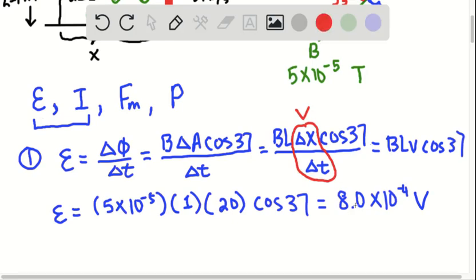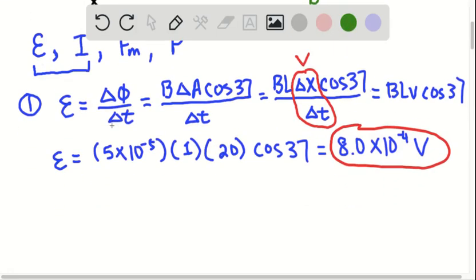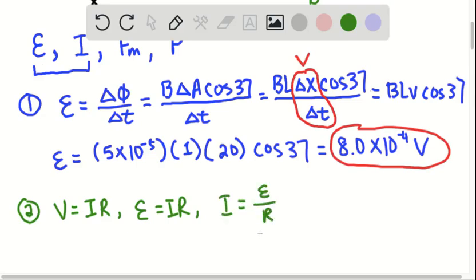Now that you have EMF, which is just another way of saying voltage, you are also able to calculate current. Because in the problem, they gave you a resistor and its resistance. You can use Ohm's law, which is V equals IR. Of course, you can substitute V with EMF. And rearranging it to find EMF divided by R, which is your current.